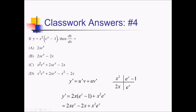We've got the x squared e to the x — check. We have the minus 2x. We have the 2x e to the x positive. So yes, choice C.